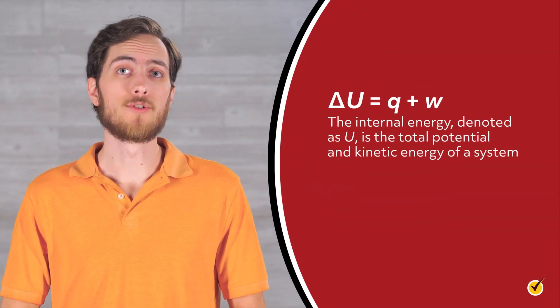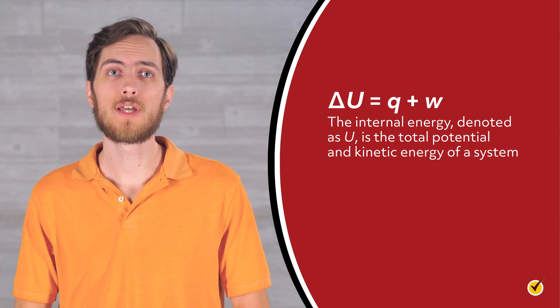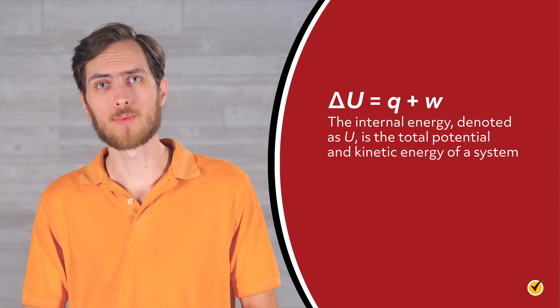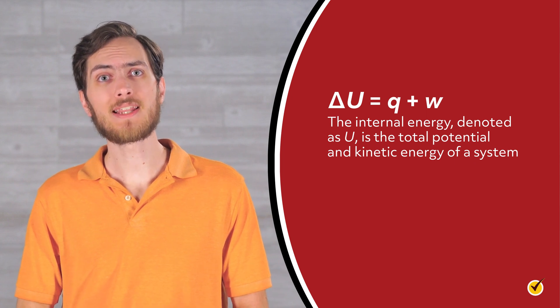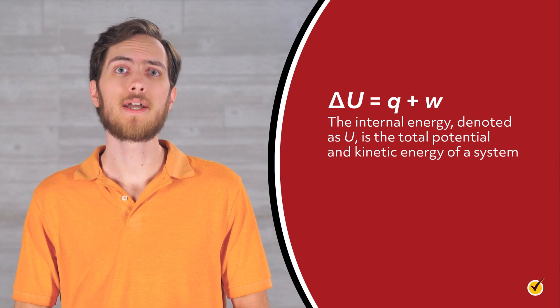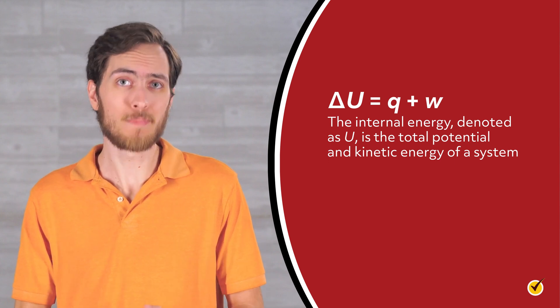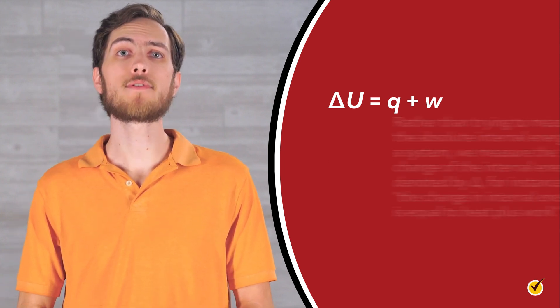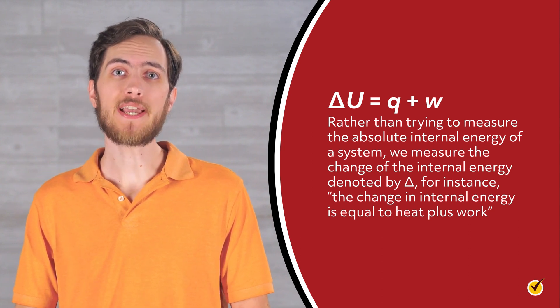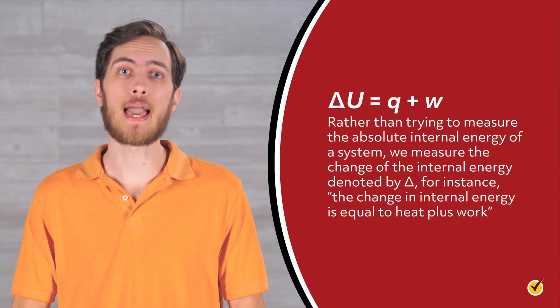For example, the internal energy, denoted as U, is the total potential and kinetic energy of a system. That's an incredibly hard number to actually calculate. We'd have to infinitely separate out all the zillions of molecules and their subatomic particles and account for their kinetic energy. It's basically impossible. So, rather than trying to measure the absolute internal energy of a system, we measure the change of the internal energy denoted by the capital delta.